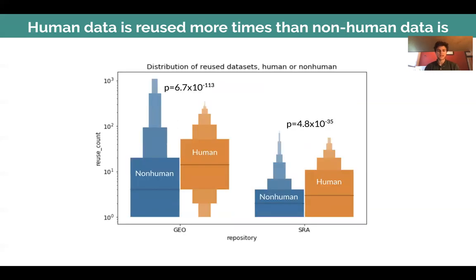We can also look at the species of datasets and compare reusability. Human datasets are reused significantly more times than non-human datasets, and that can be observed in both GEO and SRA, but there is a bigger difference in GEO.